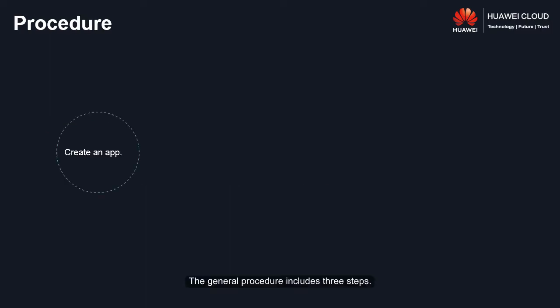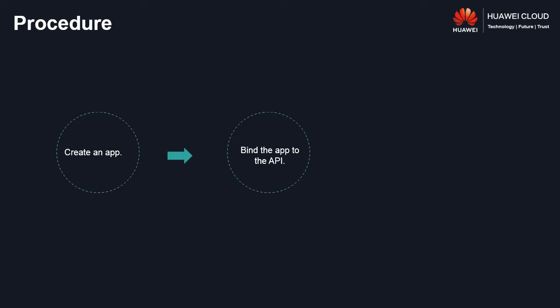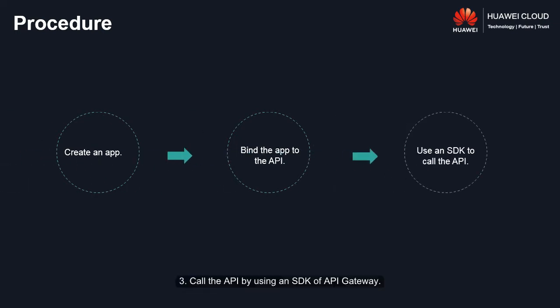The general procedure includes three steps. First, create an app. Second, bind the app to the API we want to call. Third, call the API by using an SDK of API Gateway.